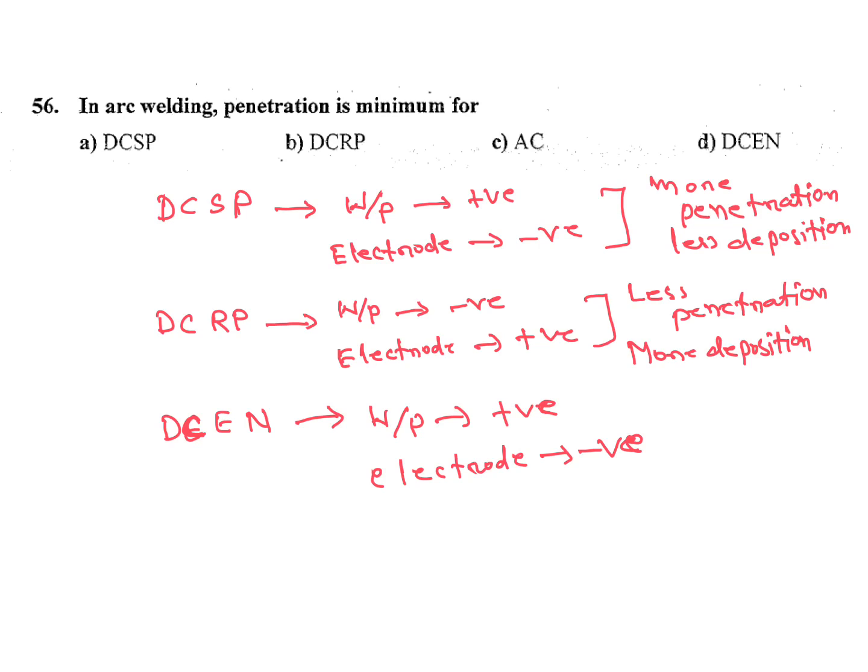So in this question penetration is minimum, less penetration is DCRP. Less penetration it is in DCRP direct current reverse polarity.